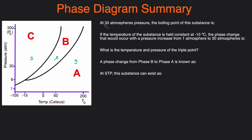The first question asks: at 30 ATM, what is the boiling point of the substance? Boiling occurs when a liquid becomes a gas, so we trace across at 30 ATM and then down to the temperature axis. That gives us 50 degrees Celsius as the boiling point at 30 ATM.